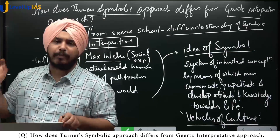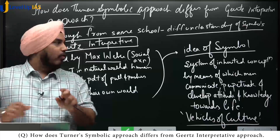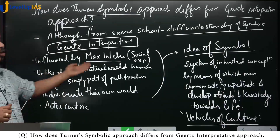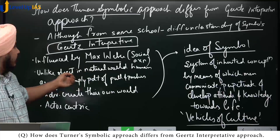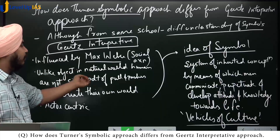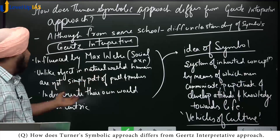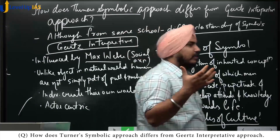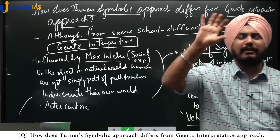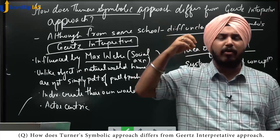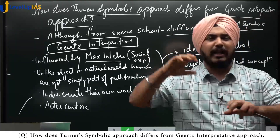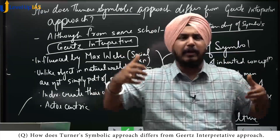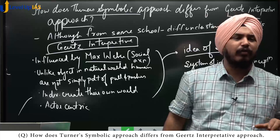Weber says that unlike objects in the natural world, human beings are not simply products of external forces. We have our own consciousness, and we can reinterpret or understand symbols in our own way.